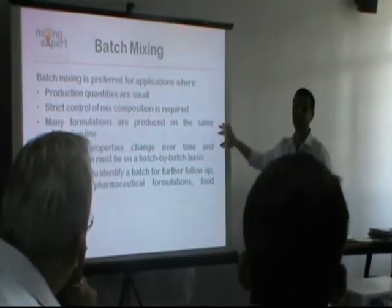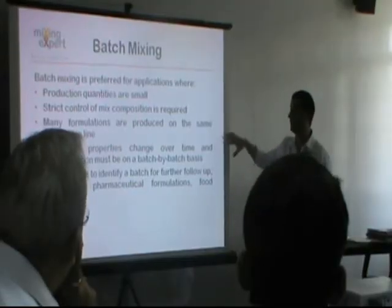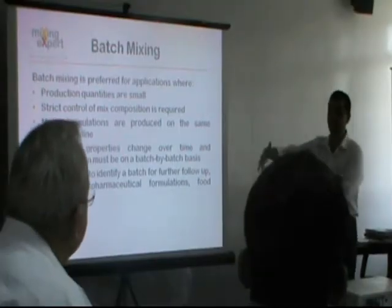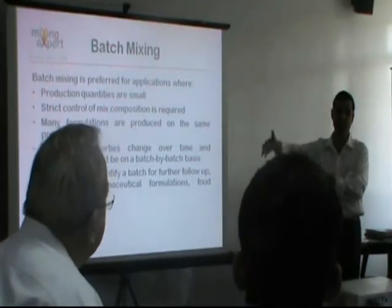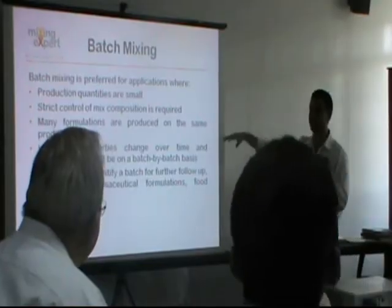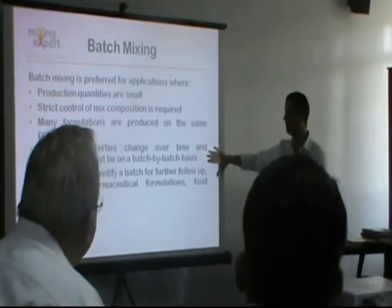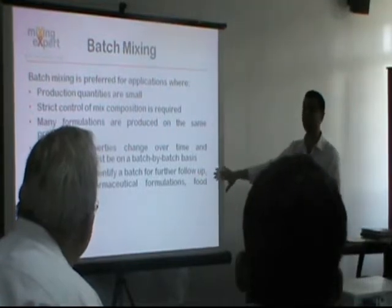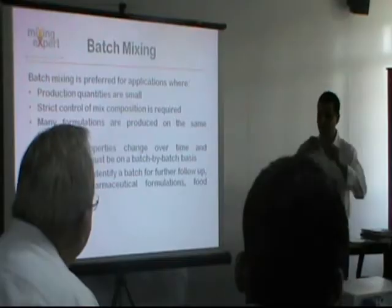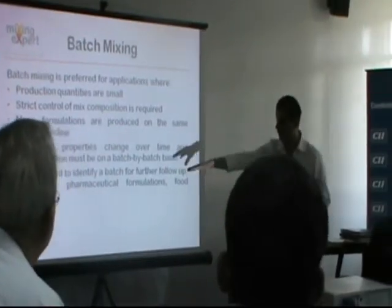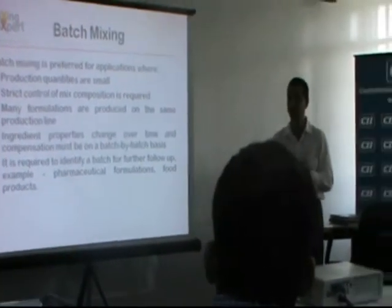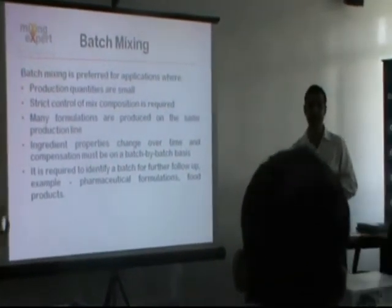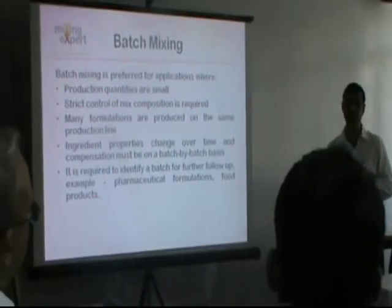Batch mixing is also used where many formulations are produced on the same line and ingredient properties need to be changed — for example, one formulation is XYZ and another is ABC, but both are run on the same process line. It is also used in applications where you need to identify the batch for further follow-up, such as in pharmaceutical and food products where it is very important to know which batch a particular product came from.